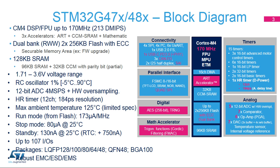Multiple low-power modes maximize battery life. The mathematical accelerators offer trigonometric functions and digital filtering computation in hardware, leaving the CPU unloaded for other tasks. The HR timer with 184-picosecond resolution is designed to control time-sensitive applications such as digital switch power sources and lighting applications. To speed up CPU performance in time-critical routines, the CCM memory supports code execution with zero-wait states.